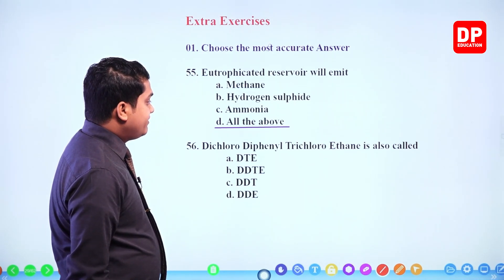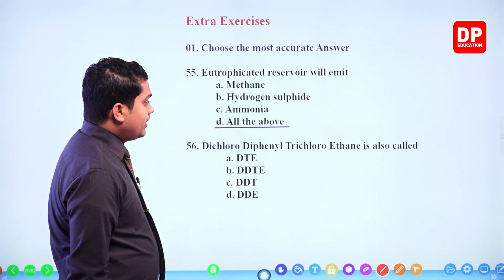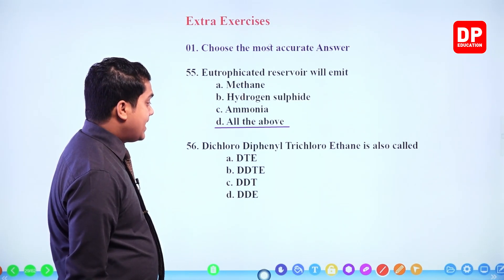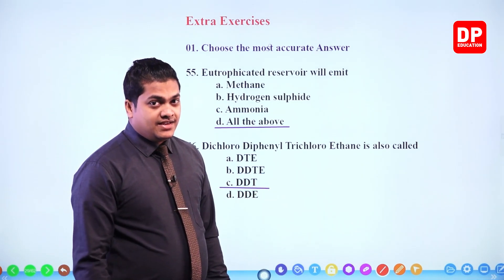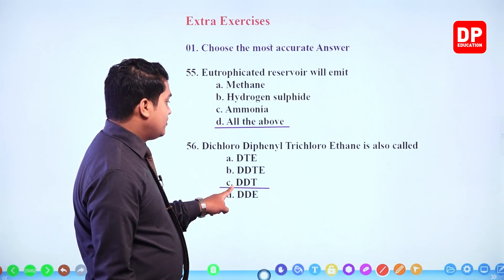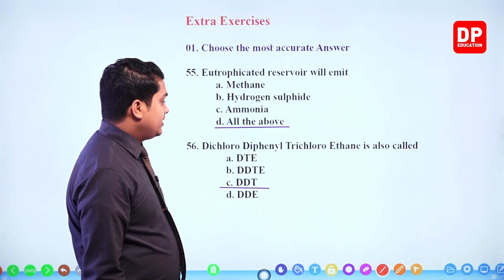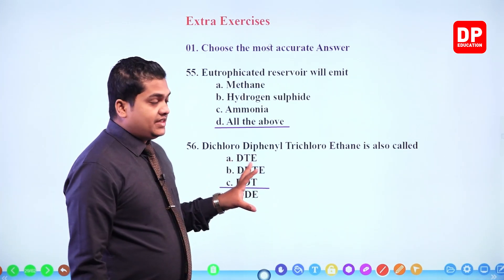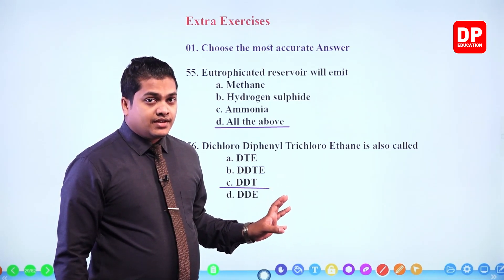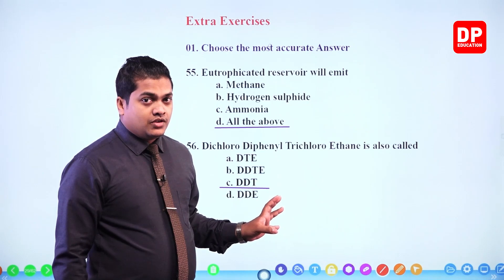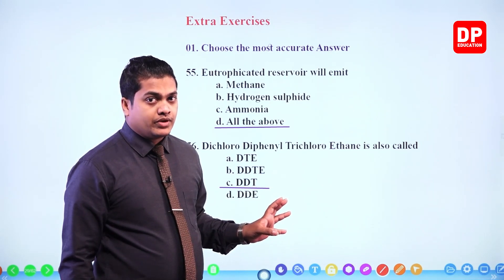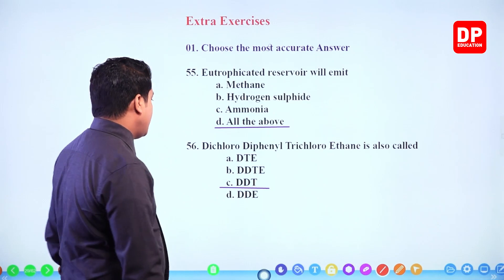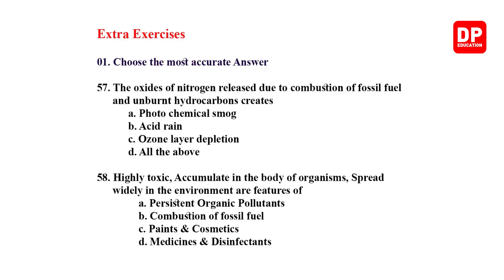Next: dichloro diphenyl trichloro ethane — DDT is included in the dirty dozen along with furan and dioxin, as persistent organic pollutants (POPs).